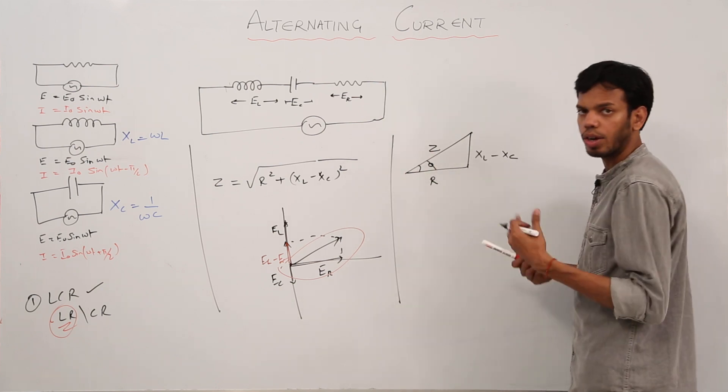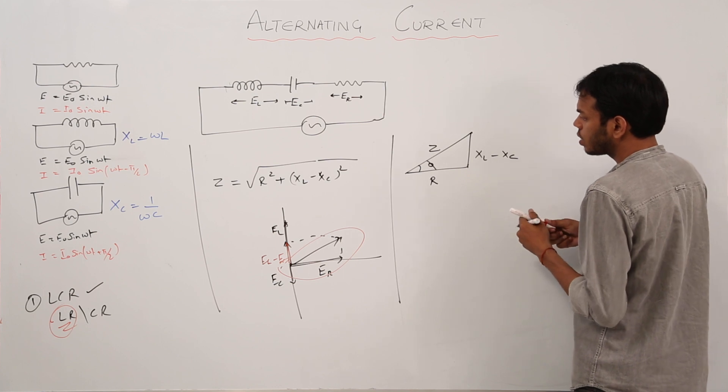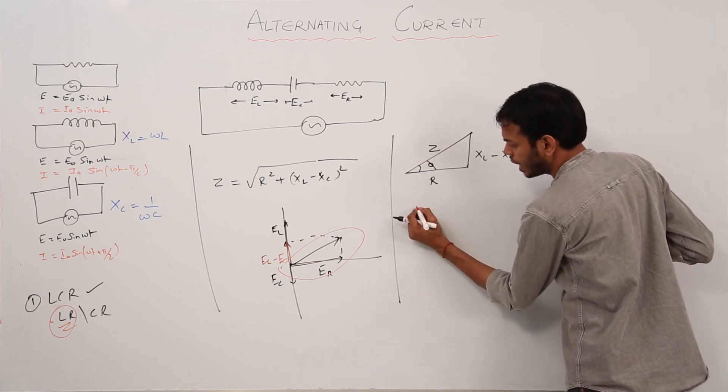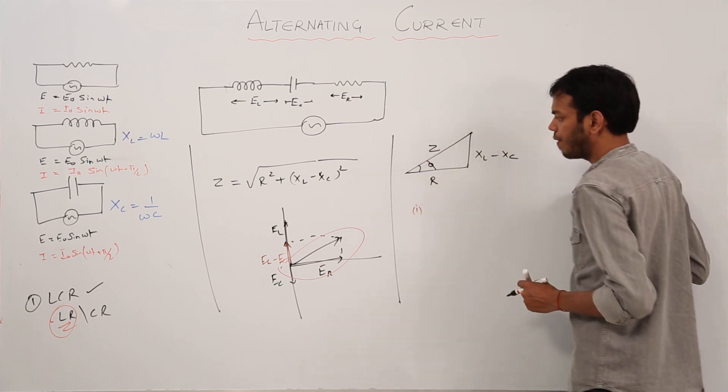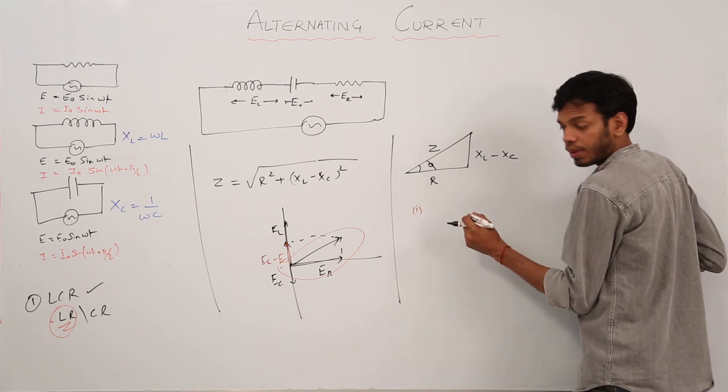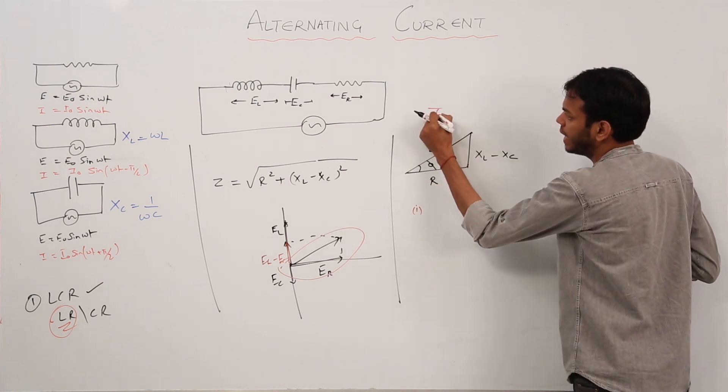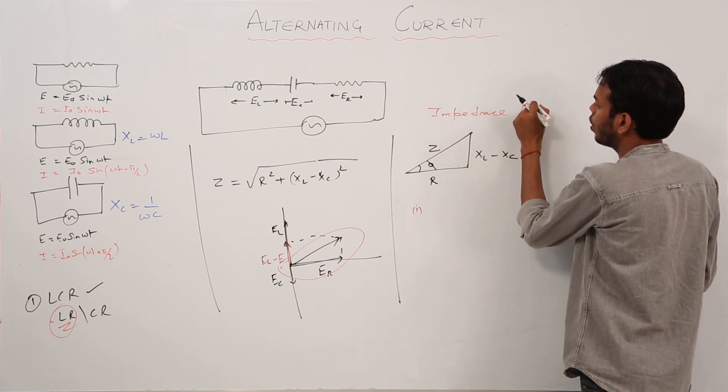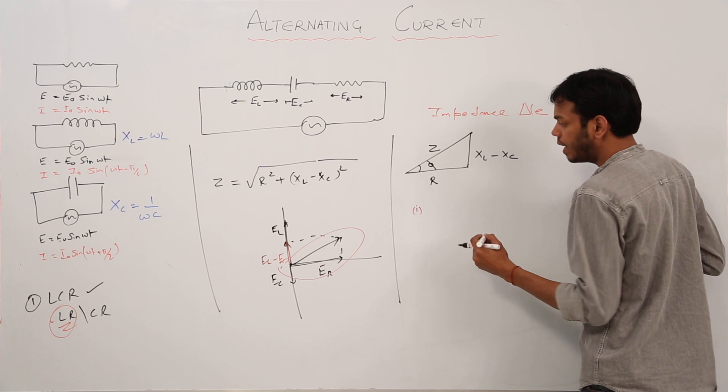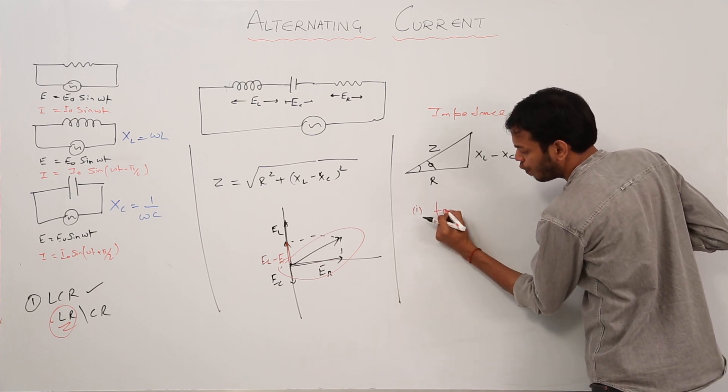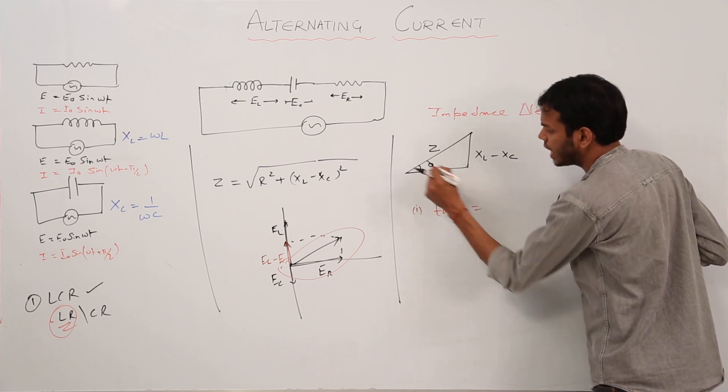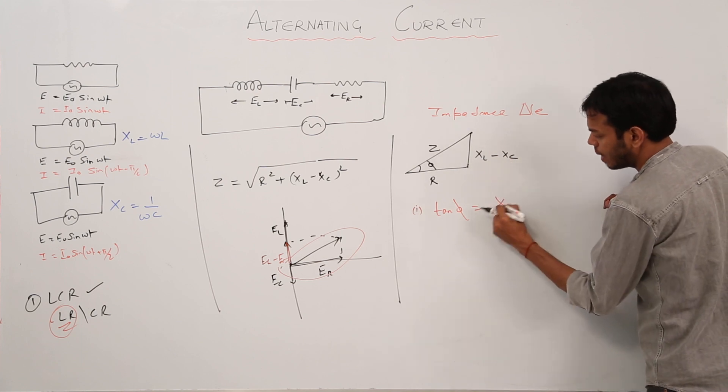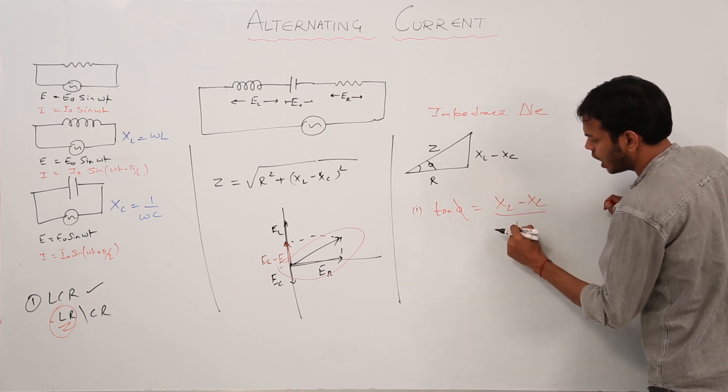This thing gives you two important facts. Number one, this is called the impedance triangle. From the impedance triangle, the first thing you can find out is the value of tan phi. What is tan phi? XL minus XC over R.